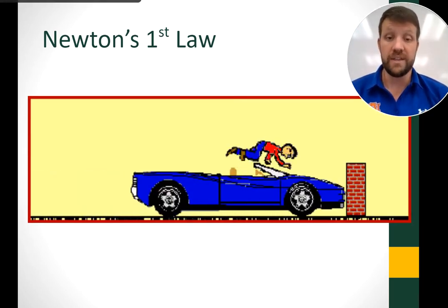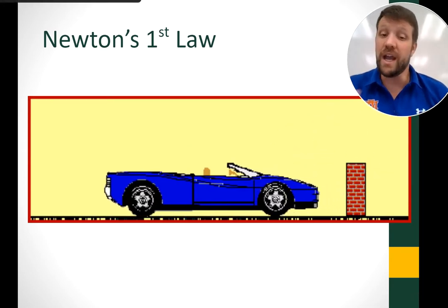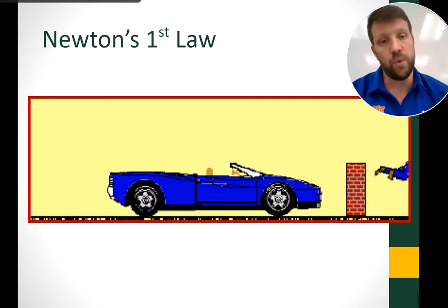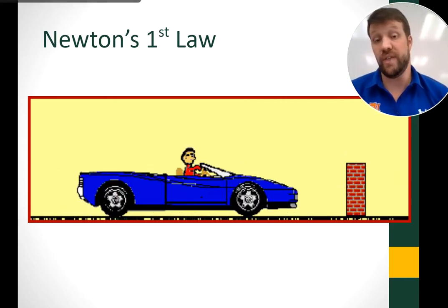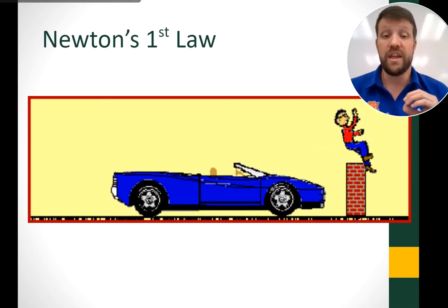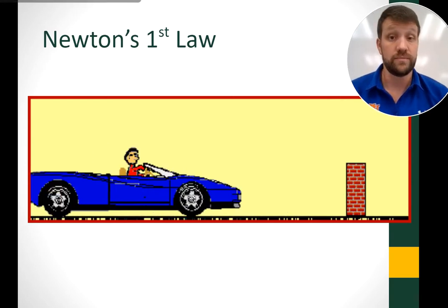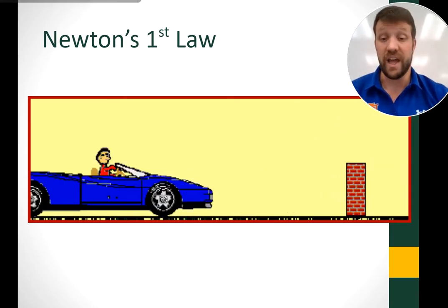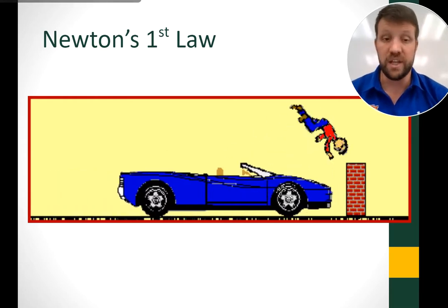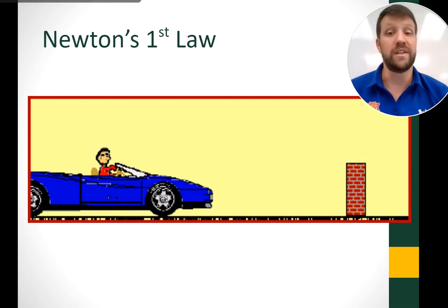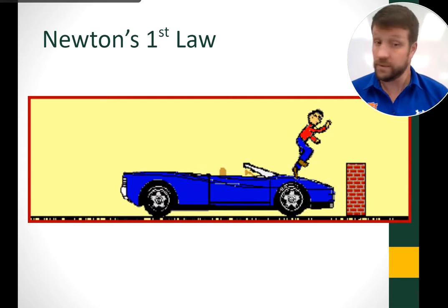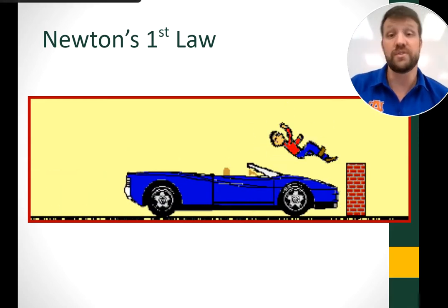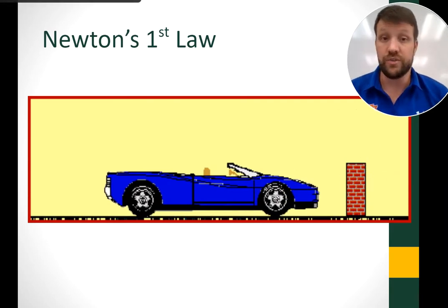Here's an example: a person in a car without a seatbelt. The car runs into a wall — an unbalanced force stops the car and even moves it backward. But the person continues forward along their previous line of motion. If they're not wearing a seatbelt, they'll keep going even though the car has stopped. This is why seatbelts were created — to stop you with the car. Wear your seatbelt.